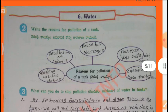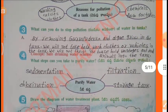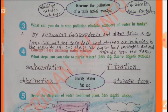Write the reasons for pollution of a tank: Washing cattle, clothes, dead bodies of animals, household vestiges, immersed metals made with chemicals, chemicals from factories. What can you do to stop pollution? By removing weeds and algae that grow in the tank. We will not take bath, wash clothes or vehicles in the tank. We will not throw household waste and dead animals into the tank.